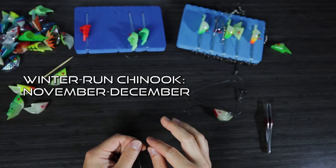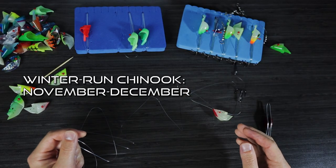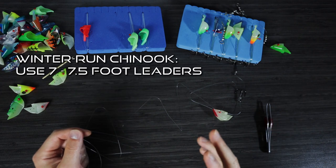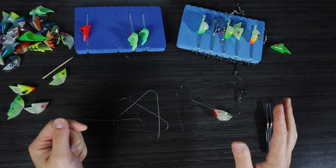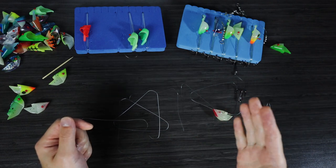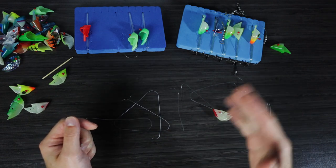For the winter run Chinook, which happens in November or December, these fish tend to be more passive. So we move up to a seven to seven and a half foot leader, which gives the anchovy, or you can use a spoon as well. It gives a little more action to entice the bite.